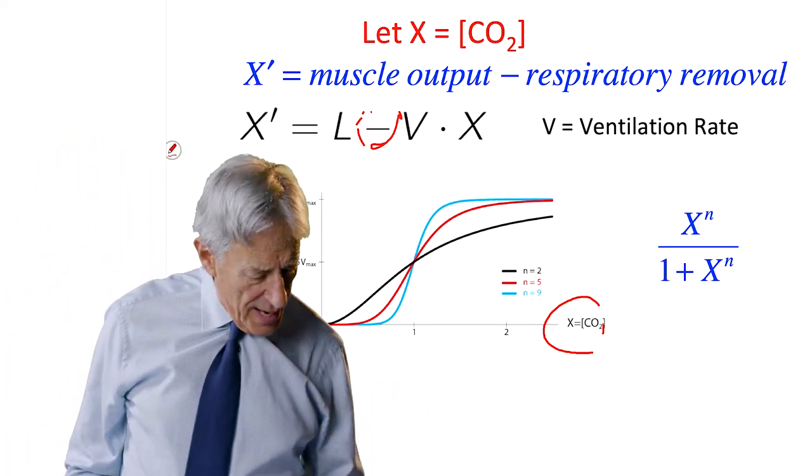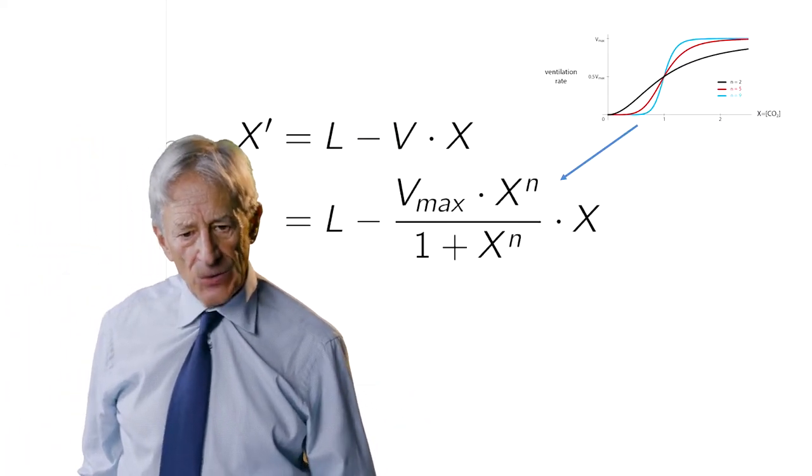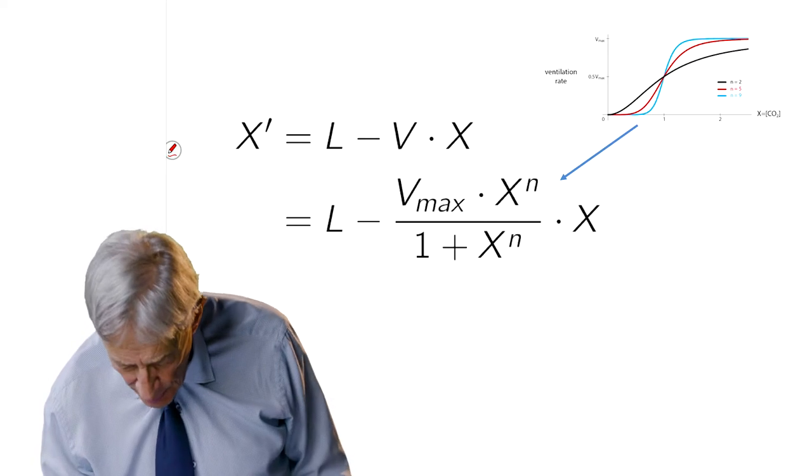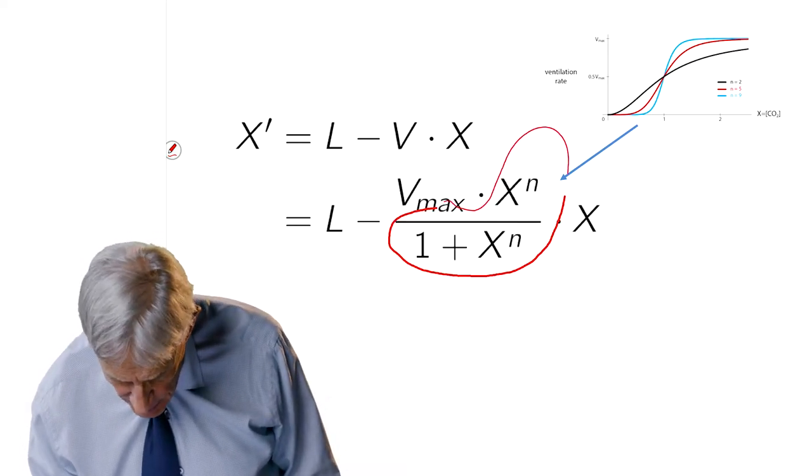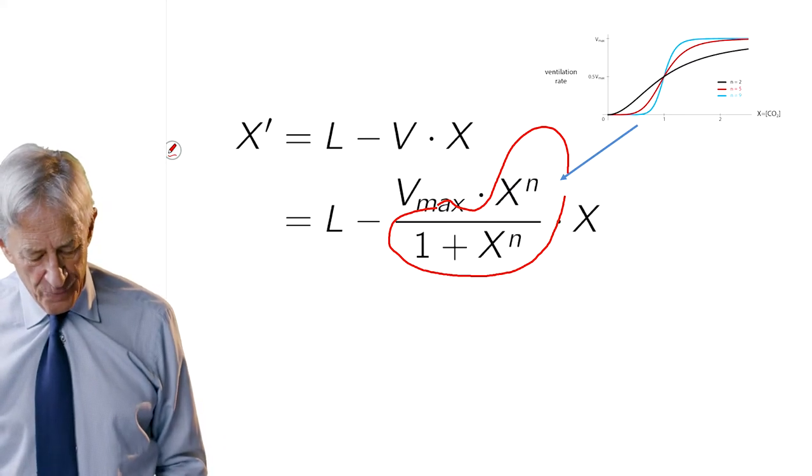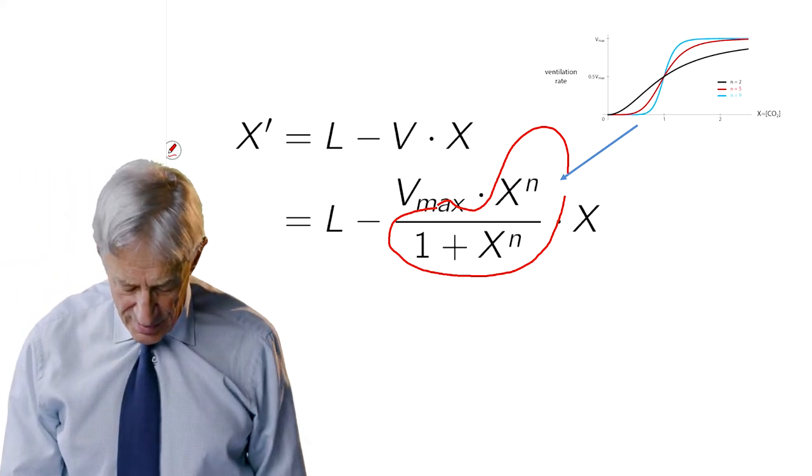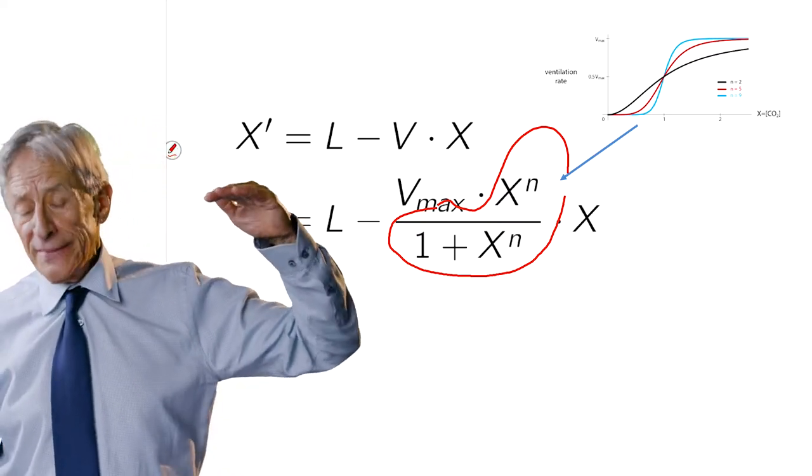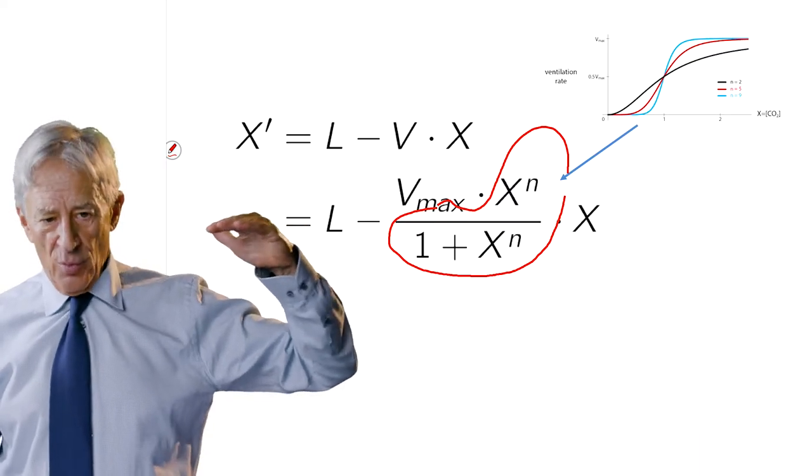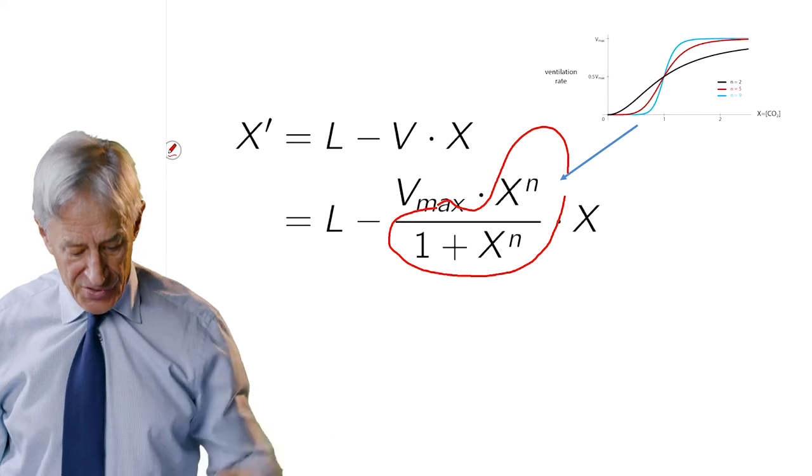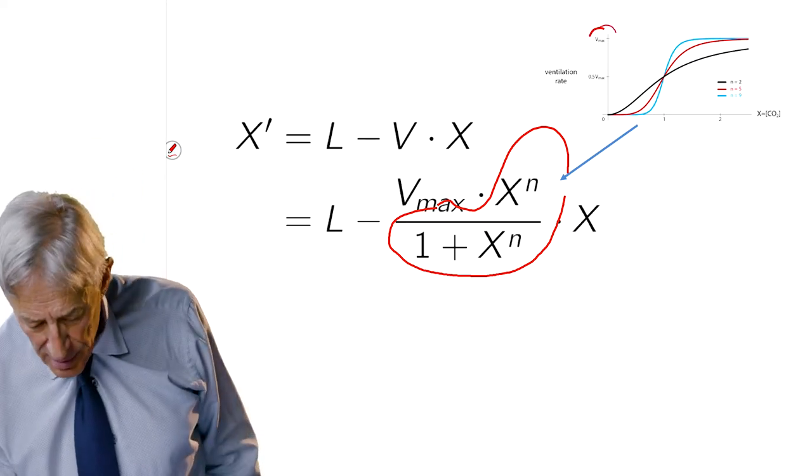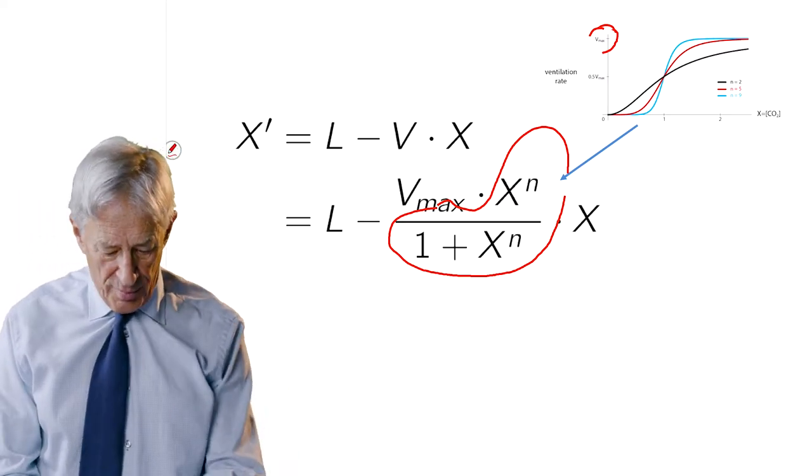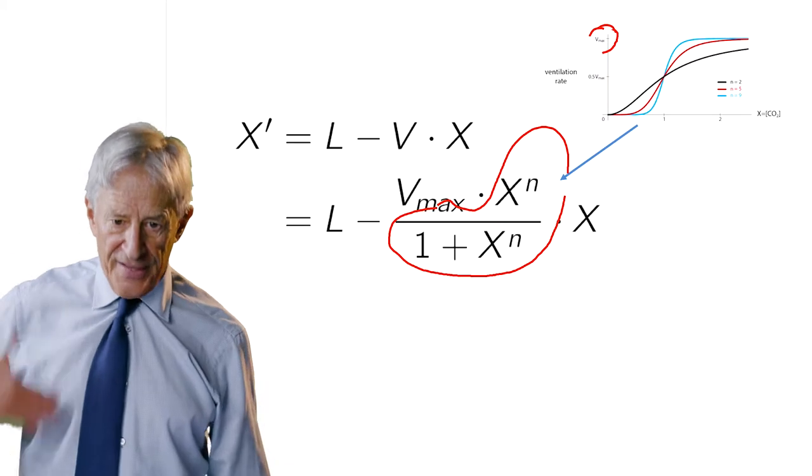So, we have a model. We put that X to the N over 1 plus X to the N in here as our ventilation rate. This function saturates at 1, which is not the value we want. We want it to saturate at a Vmax. So we just multiply that term by Vmax. And so we got Vmax X to the N over 1 plus X to the N, that's the ventilatory rate, times X, which is the CO2 concentration.